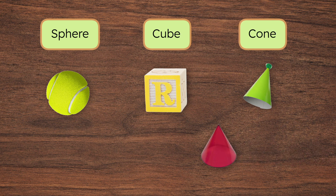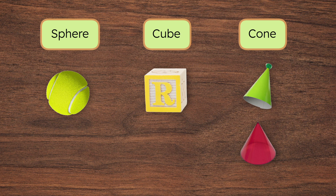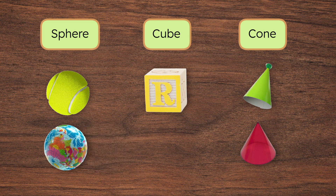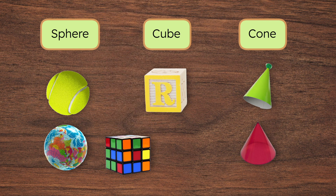What about this? That's a cone too — let's put it with the party hat. And this? Yep, it's a sphere; let's put it with the ball. Whoa, this is pretty cool — but what shape is it? It's definitely a cube. Look at that — we grouped all the objects by their shapes. Now we have a pile of spheres, a pile of cubes, and a pile of cones.